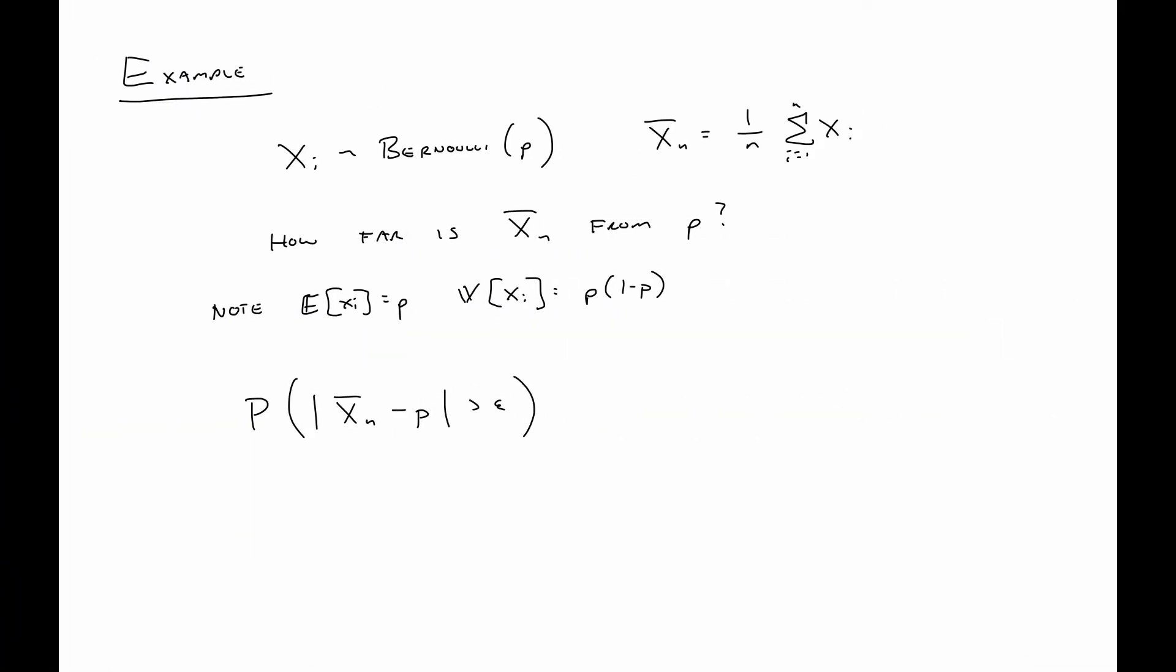Quick example. We're going to assume we have some Xi that are Bernoulli random variables with some success probability p. We'll define the sample mean, that is X bar n, the usual way. The question we want to ask is, well, how far away is the sample mean from this p, this probability of success? Perhaps you remember that when we have a Bernoulli random variable, the expected value of each Xi is p and the variance is p times one minus p.